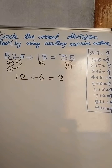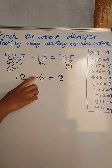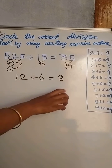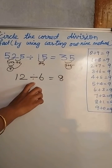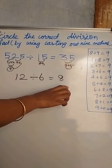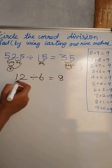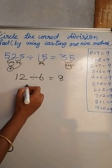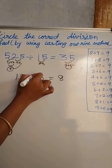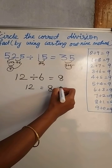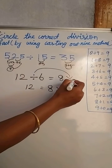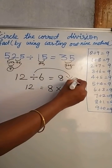Now, this division term moves to the right-hand side. When a division term moves to the other side, it becomes multiplication. So we write: 12 is equal to eight multiplied by six.